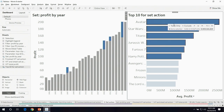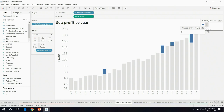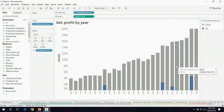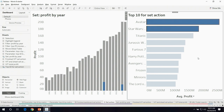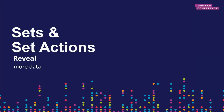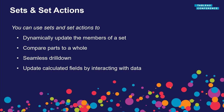If I select multiple movies, you can see that changes the view on the left as well. One small thing I want to change for visual best practices: I'll go into this view and change the order so it's easier to compare different movie titles to each other. Set actions give the user the ability to dynamically update the membership of a set, allowing you to drive calculations and drive changes in the view. These are incredibly powerful, and I'm so excited we've just released them. There are a number of talks about set actions at this conference — I'll link to two talks at the end.